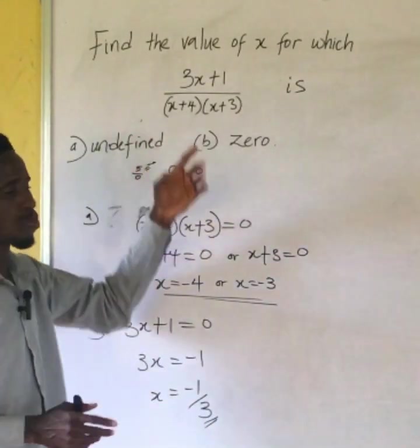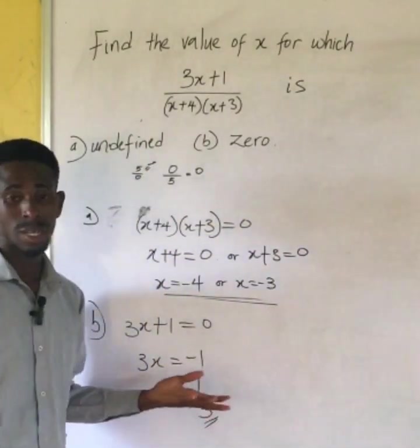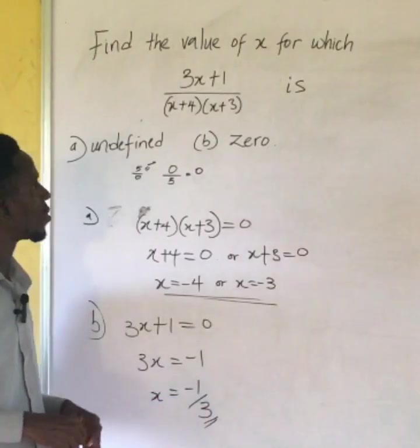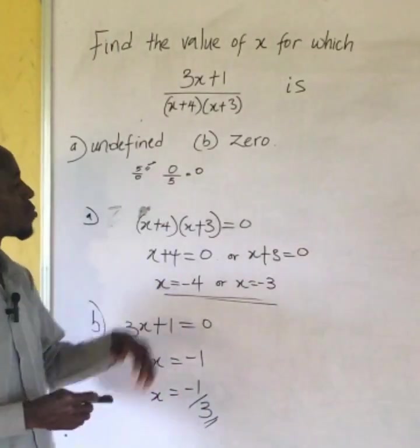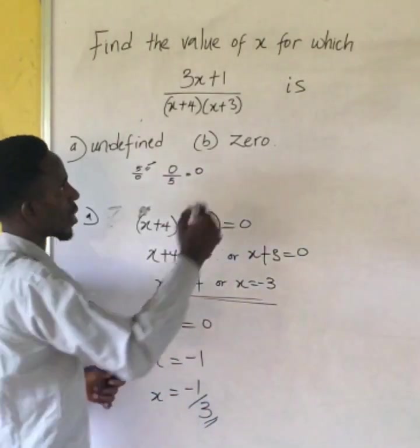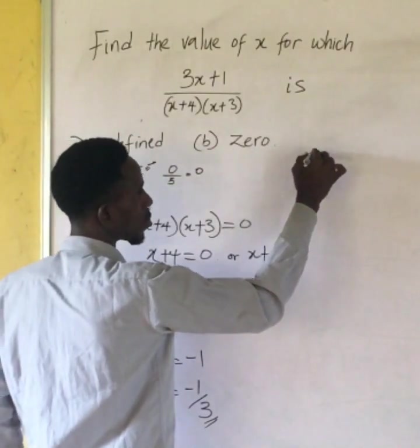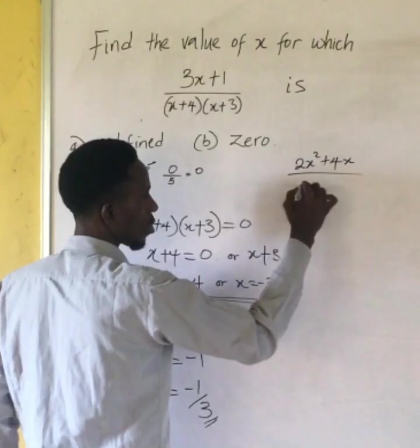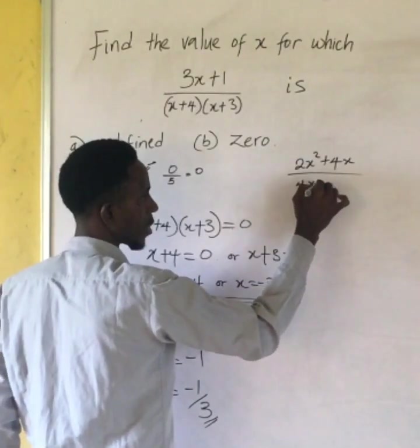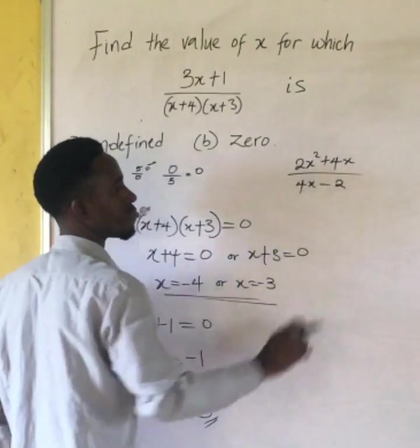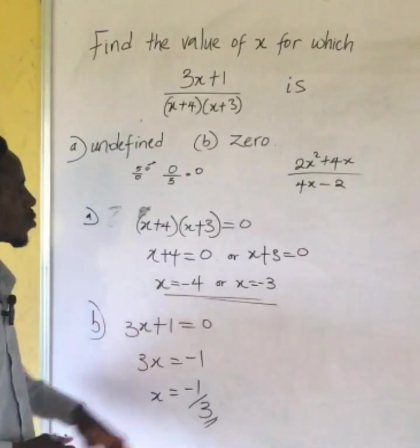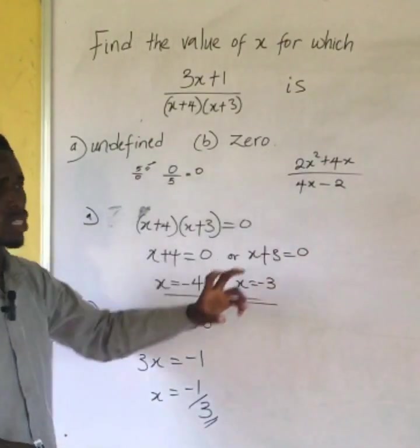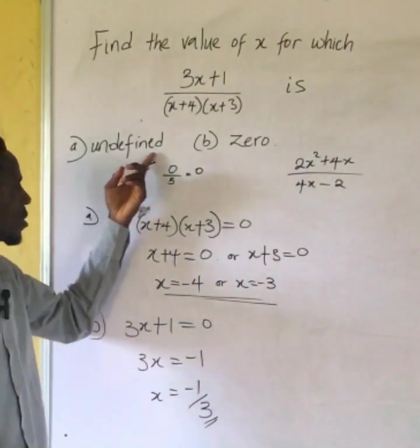The expression you have here is looking very simple. So I'm going to try this one - you have 2x squared plus 4x over 4x minus 2.